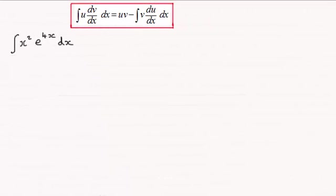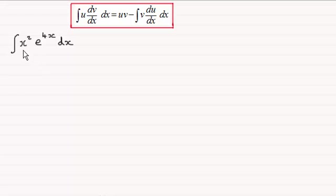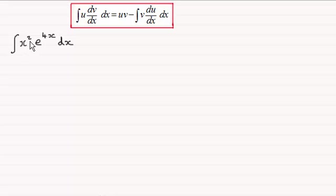Hi there. In the previous video, assuming that you watched it, I showed you how to integrate by parts functions like x times e to the 4x. What I want to do now is show you how we handle ones where we've got x squared in the front rather than just an x.